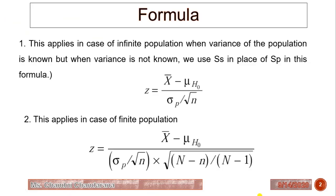As discussed in the previous lecture, these are the two formulas to identify the Z value. The first formula applies in the case of an infinite population, and the second formula applies in the case of a finite population. It will become clear from the examples which formula to apply in which kind of problem.